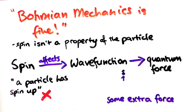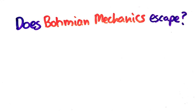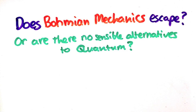I'm pretty conflicted about this, and I'd love to hear your opinion about all of this. Does Bohmian mechanics escape, or is this really the final blow for all sensible alternatives to quantum mechanics? I don't know, but I'd like to leave you with one deep and meaningful thought though. Spin is weird.